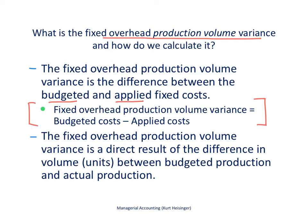The fixed overhead production volume variance is typically the direct result of the difference in volume between budgeted production — what we expected to produce — and actual production, what we actually produced. Let's take a look at a more detailed example of this on the next slide.